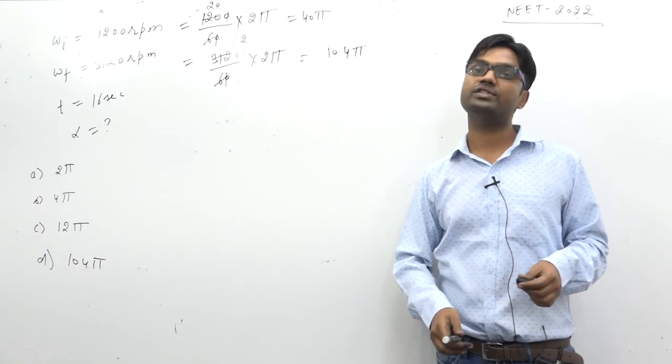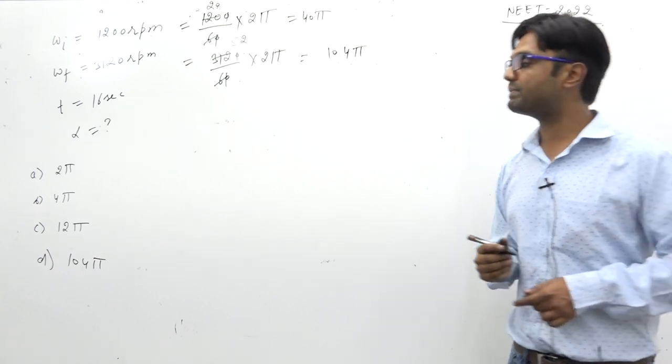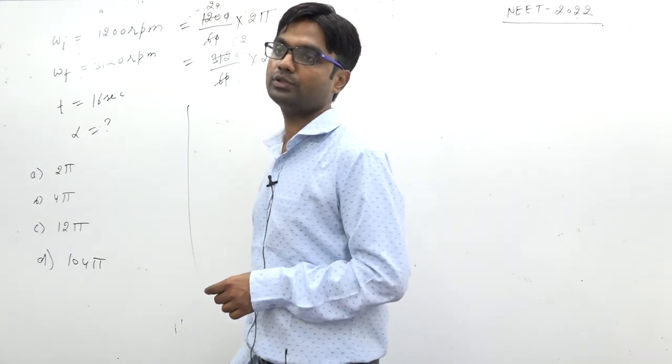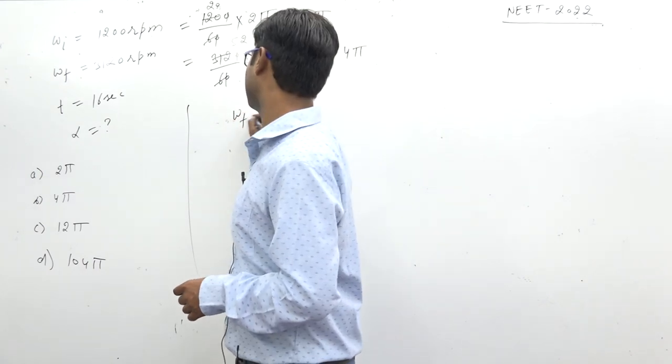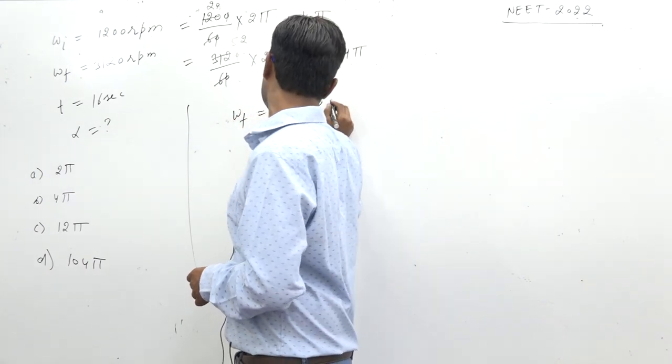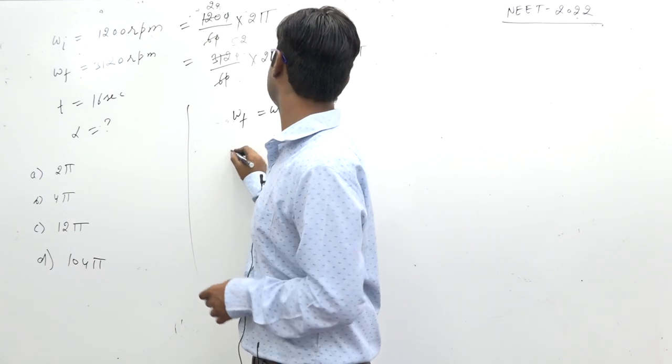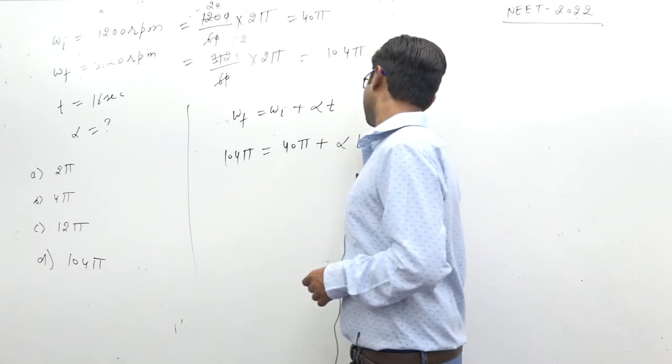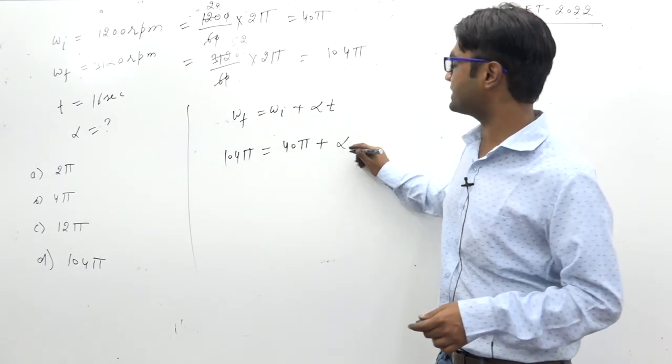Initial angular velocity, final angular velocity, time of 16 seconds. First equation of motion, first equation of circular motion. Omega final equal to omega initial plus alpha t. 104π by 3 equals 40π plus alpha into 16 seconds.